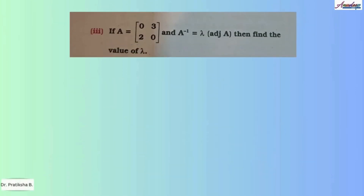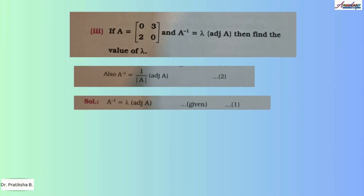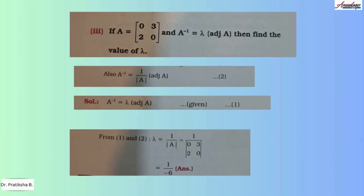In this problem, you have been given a 2x2 matrix A and the relation A inverse equals lambda times the adjoint of A. We need to evaluate the value of lambda. Since A inverse is 1 upon determinant of A times adjoint of A, comparing with the given condition, we get lambda equals 1 upon determinant of A. Evaluating the determinant of A from the given elements, it comes out to be minus 6, so the answer is lambda equals 1 upon minus 6.